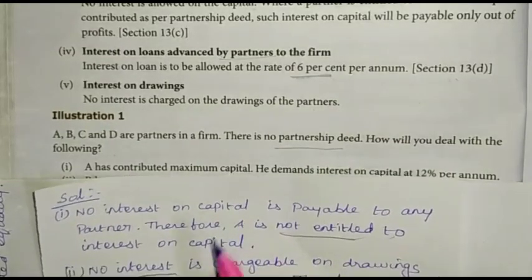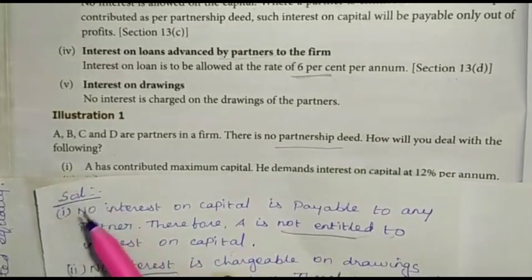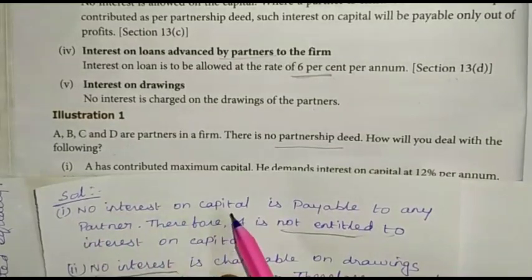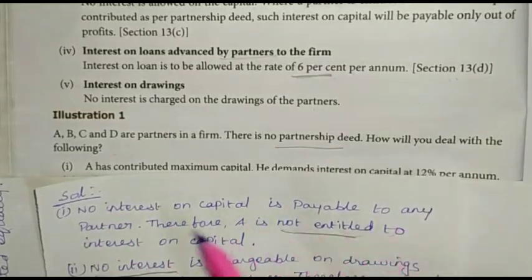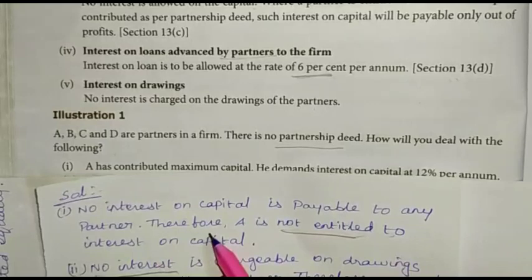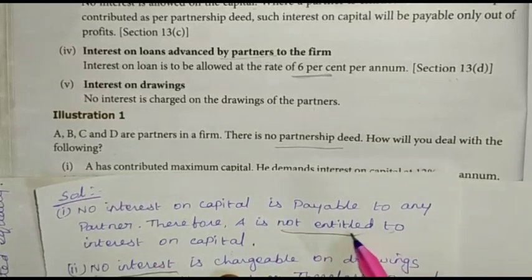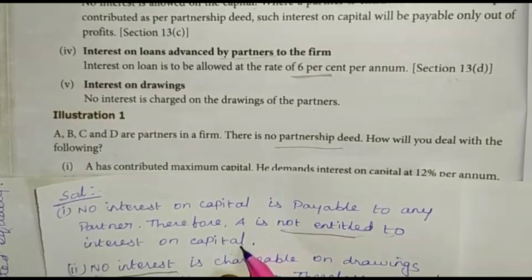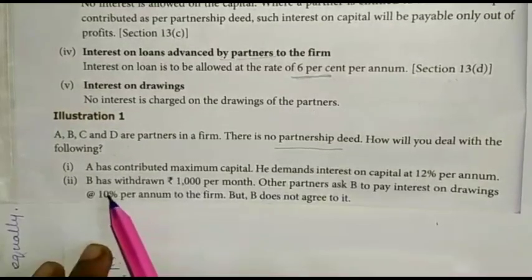Solution: No interest on capital is payable to any partner. Therefore, A is not entitled to interest on capital.